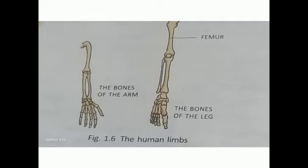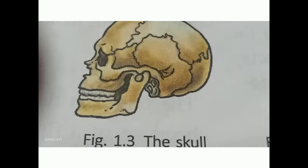Next, I will explain the skull. The skull is made up of 22 bones. Eight flat bones interlock together and enclose the delicate brain inside it. There are 14 bones in the facial region. Among them, only the lower jaw is movable. It enables us to eat and talk.